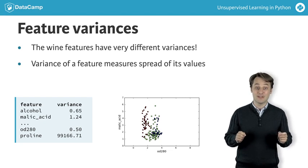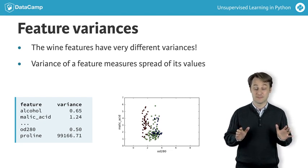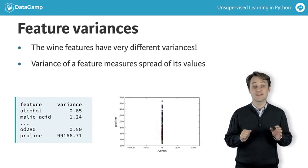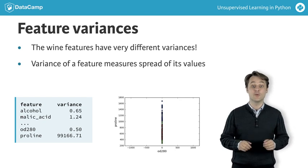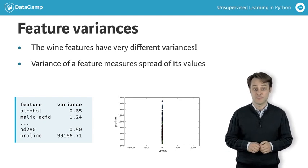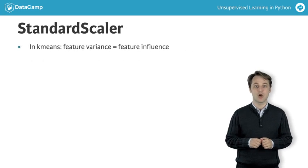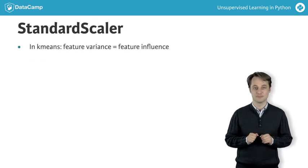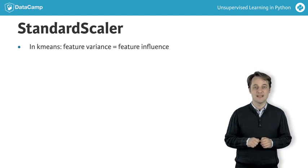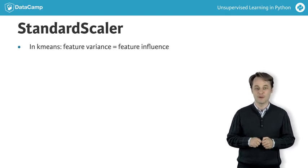The differences in some of the feature variances is enormous, as seen here in the scatter plot of the OD280 and proline features. In K-means clustering, the variance of a feature corresponds to its influence on the clustering algorithm. To give every feature a chance, the data needs to be transformed so that the features have equal variance.